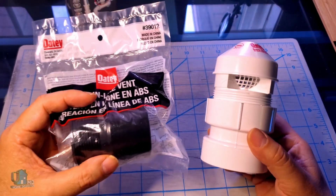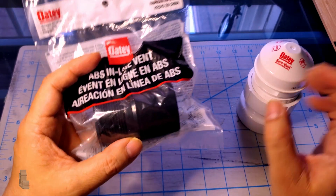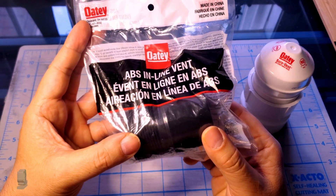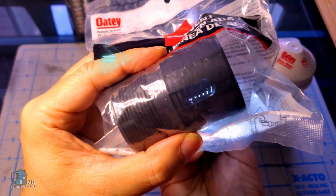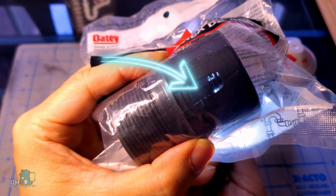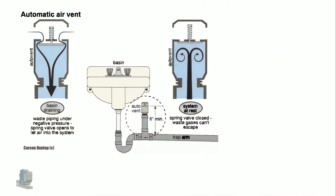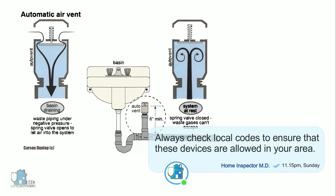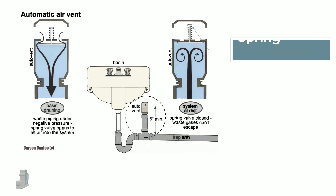Now we have two versions of an air vent that look different but perform the same basic function. First, this device is called an automatic air vent, or as you can see on the package, an inline vent. Its main distinguishing feature is the use of a spring mechanism to open and close the valve. The automatic air vent is no longer suggested for use, because the metal spring and rubber parts give a greater possibility of wear and failure, especially considering the location of these devices is a bit harsh.